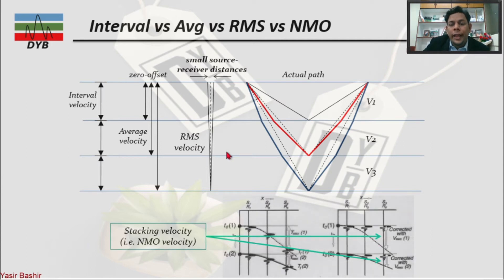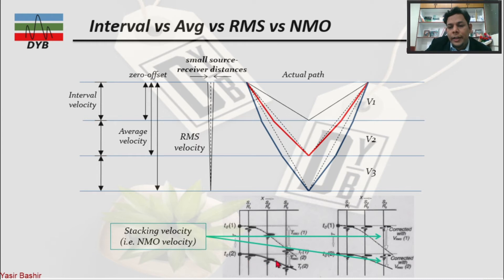Another velocity type is the NMO velocity, which is used for stacking your data. NMO velocity applies when you have shot-gather data and you are picking your hyperbolic moveout to flatten the reflections. How much velocity you need to bring the reflection event from its offset position to the zero-offset position is called your NMO velocity or stacking velocity.